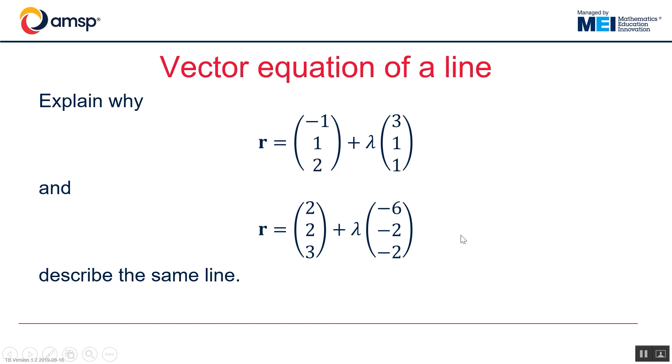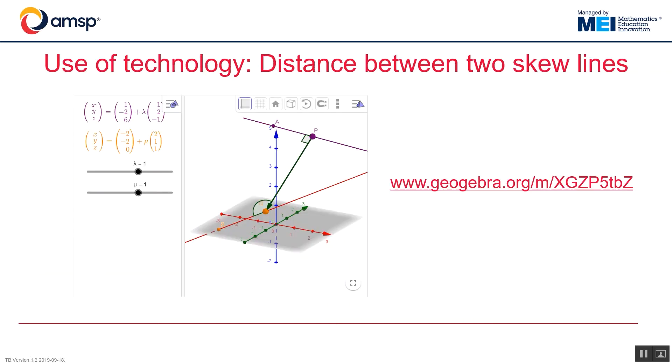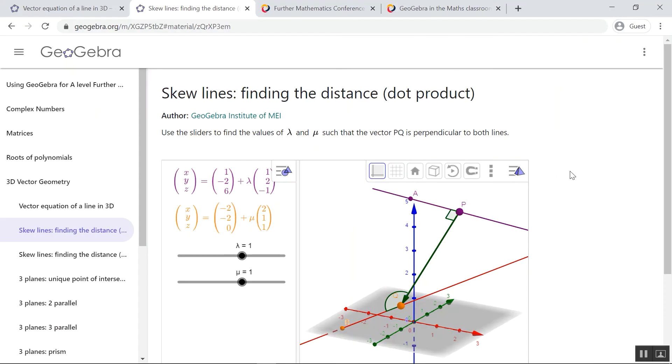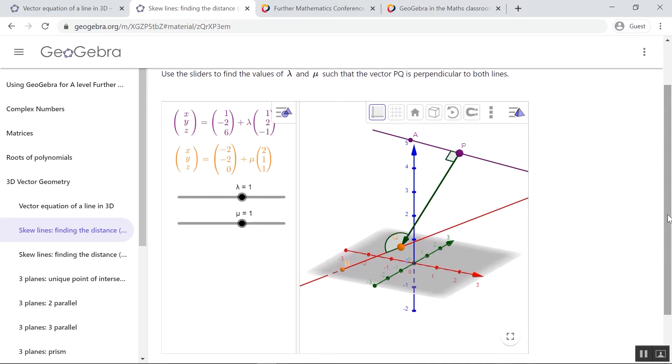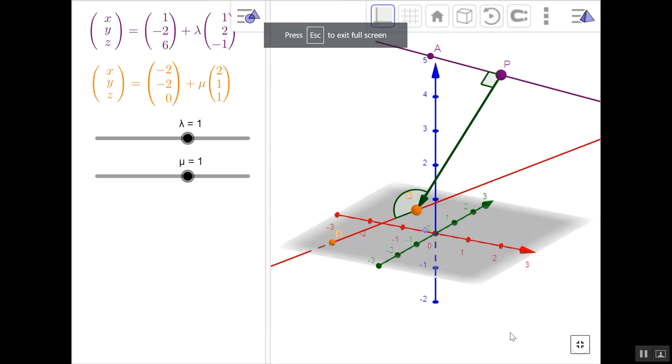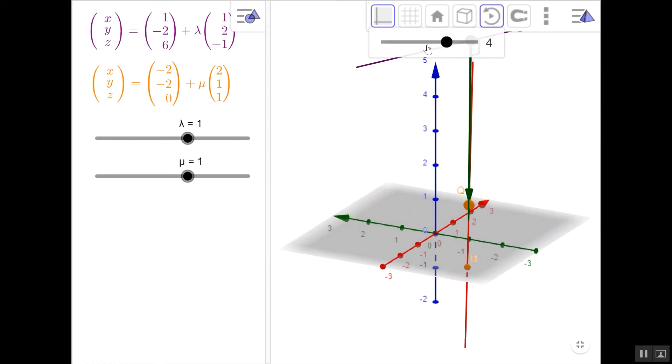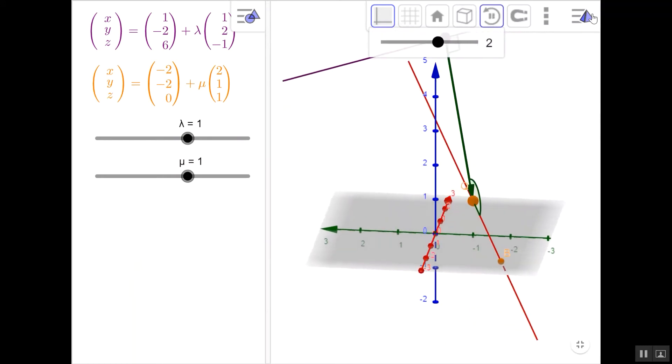So that's vector equation of a line. Once students have got the concept of vector equation of a line, we can use a similar tool to start explaining some other concepts in vectors, such as how do you find the distance between two skew lines. And again, I've got a 3D file that's going to demonstrate this. So here is this dynamic file in that GeoGebra book for further maths. I'll just expand it to full screen again and give the screen a slight spin so we get this sense of 3D motion.